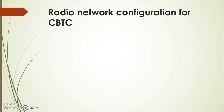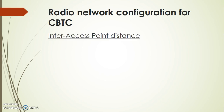Radio Network Configuration for CBTC. Network configuration for CBTC depends on two factors: one is inter-access point distance, that is the distance between two adjacent access points, and the other is the antenna configuration.